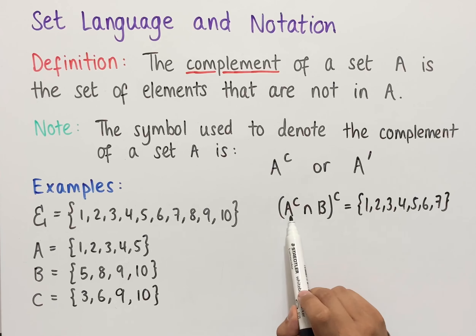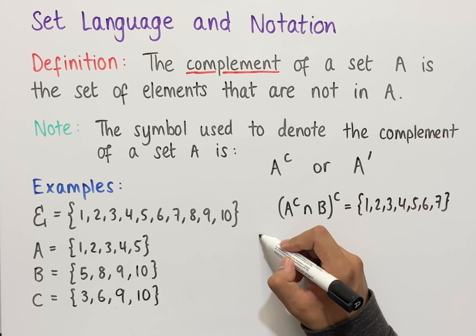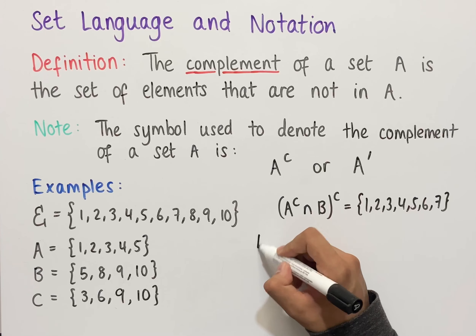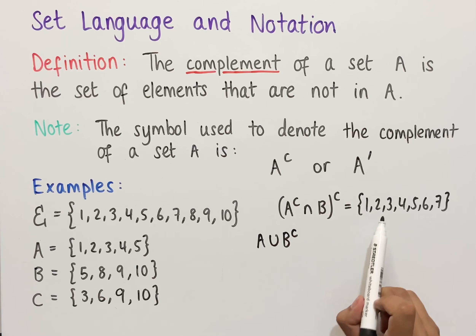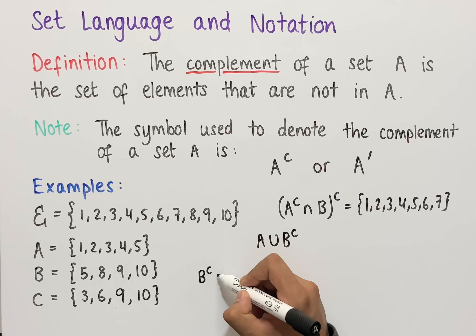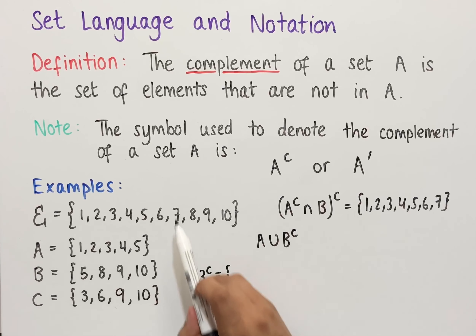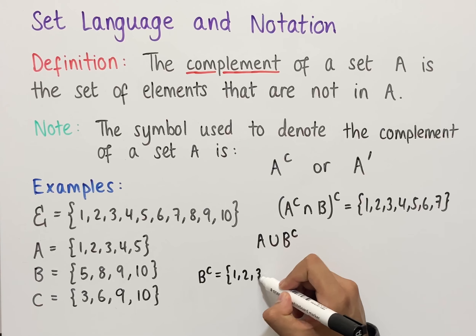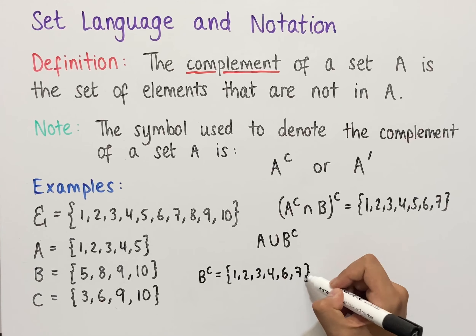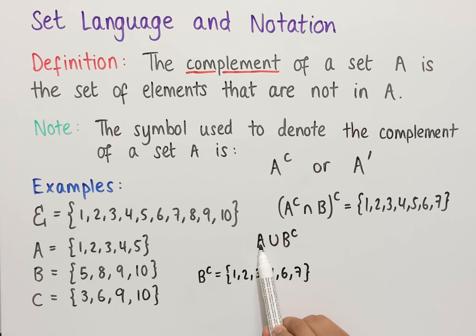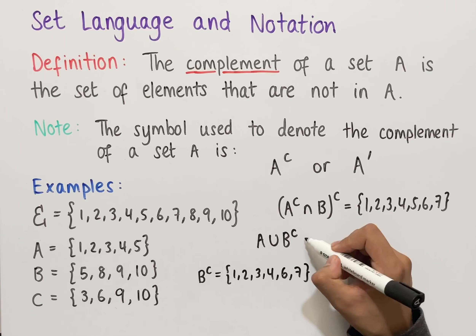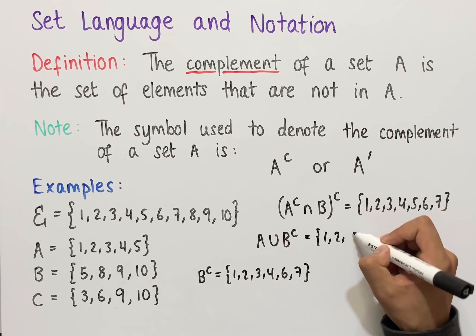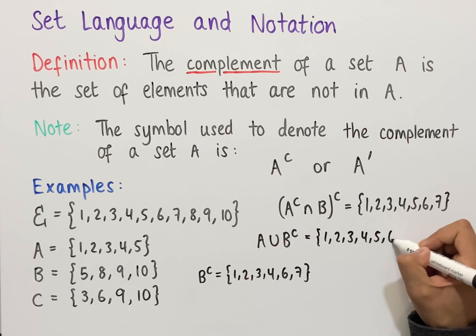If we apply the complement to each symbol inside the brackets, we get A complement complemented — which is just A — then the intersection switches to union, and B complemented becomes B complement. So working out A union B complement gives us the same set. B complement is 1, 2, 3, 4, 6, and 7, and A union B complement — all elements in A, in B complement, or in both — equals 1, 2, 3, 4, 5, 6, and 7. These two sets are exactly the same.